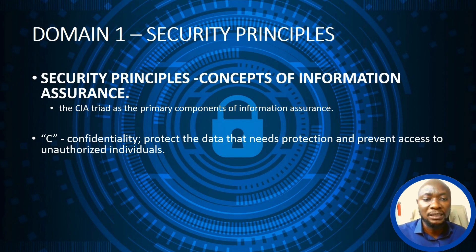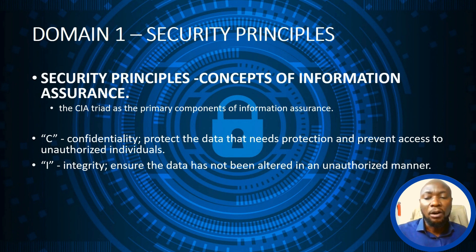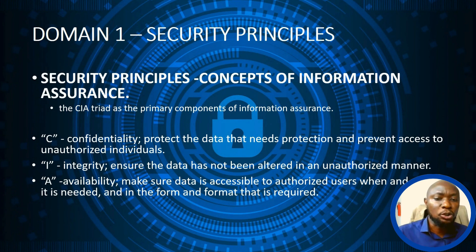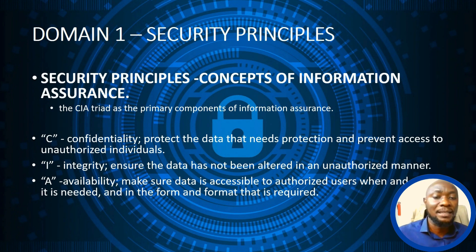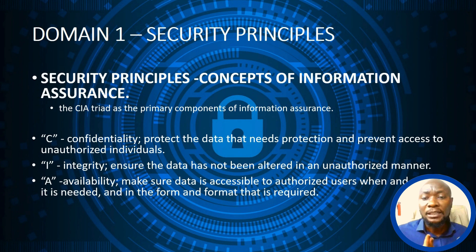The I stands for Integrity — ensuring that data has not been altered in an unauthorized manner; any alteration must be authorized. The A stands for Availability — making sure data is accessible to authorized users whenever they need it, in the form and format required. Hackers always try to prevent access to information; incidents like DDoS or ransomware are examples of stopping access to your information.